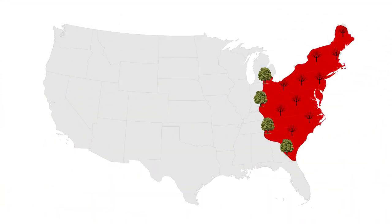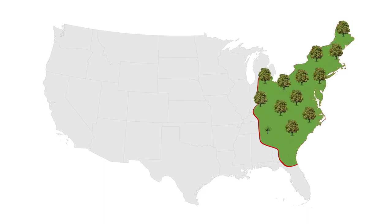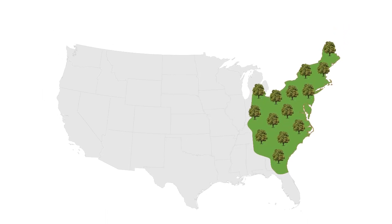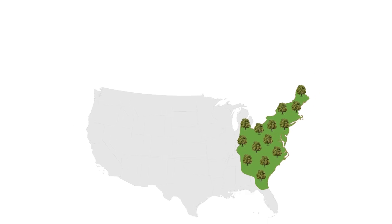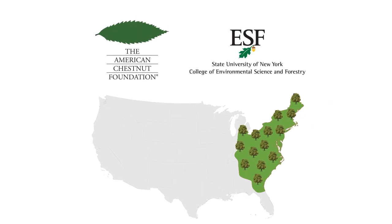Just as the blight originally spread outward from New York State, so can its remedy. The blight-tolerant American chestnut trees, with help from our collaborators the American Chestnut Foundation and others, can extend the restoration efforts throughout the American chestnut's range.